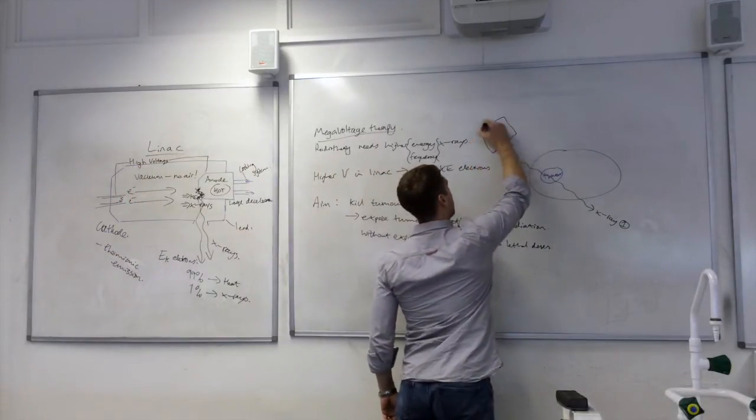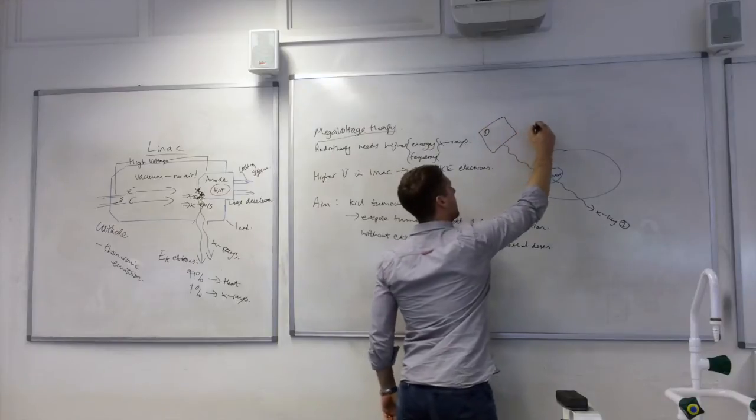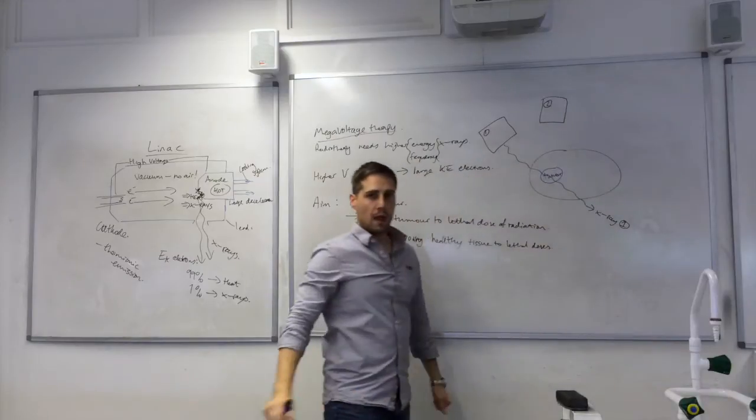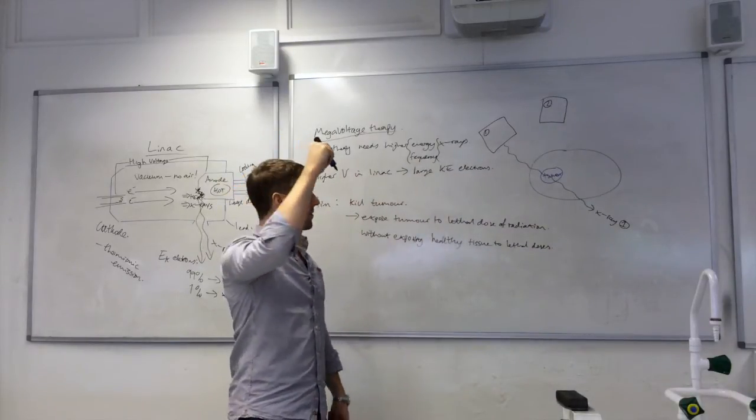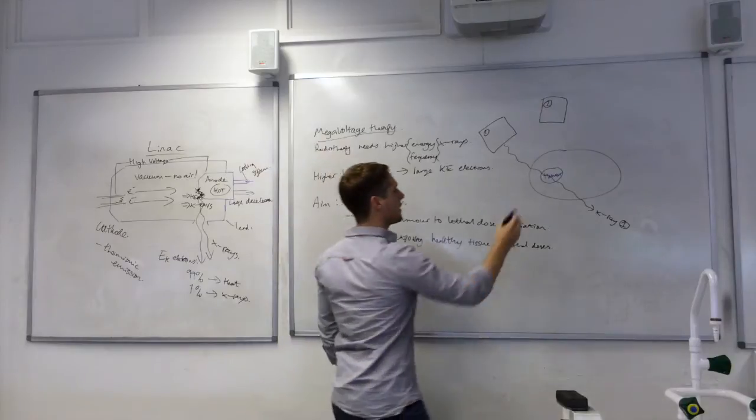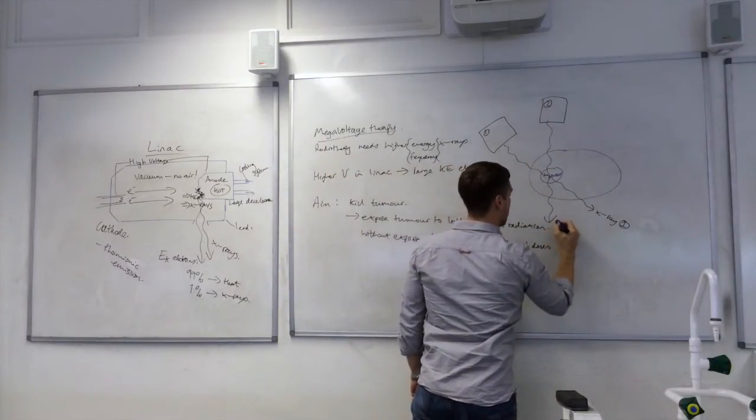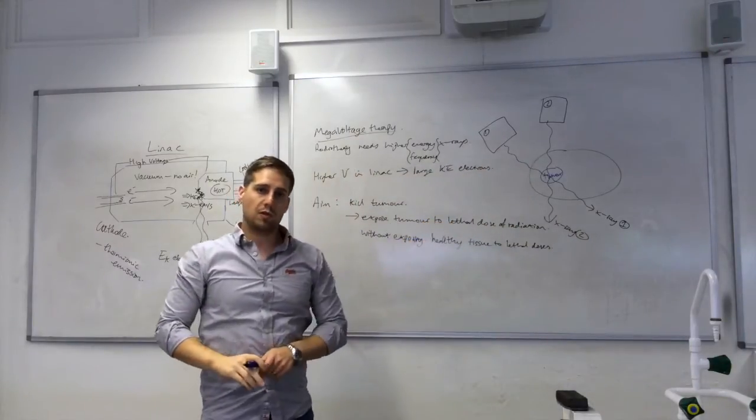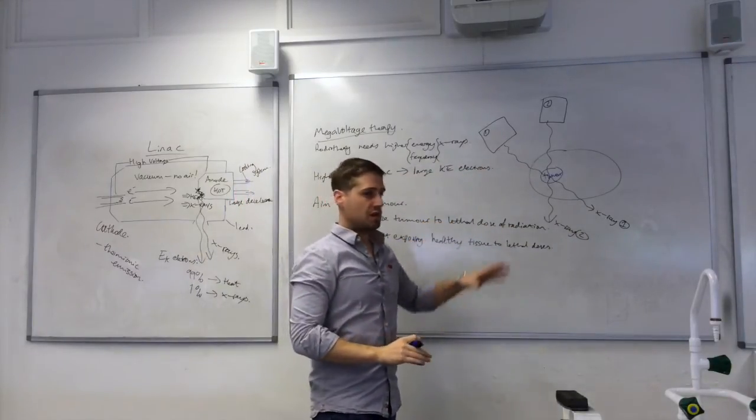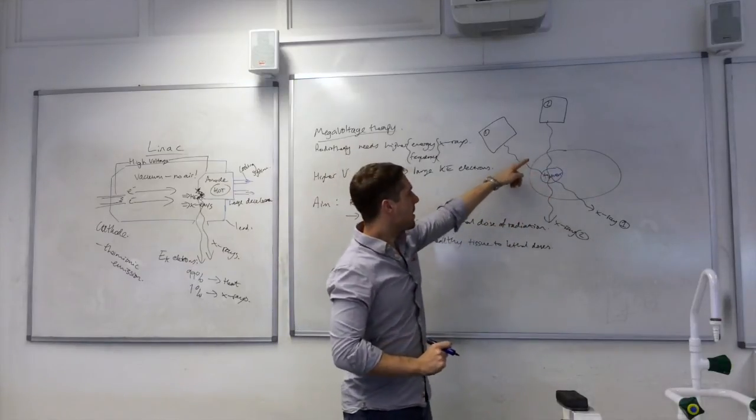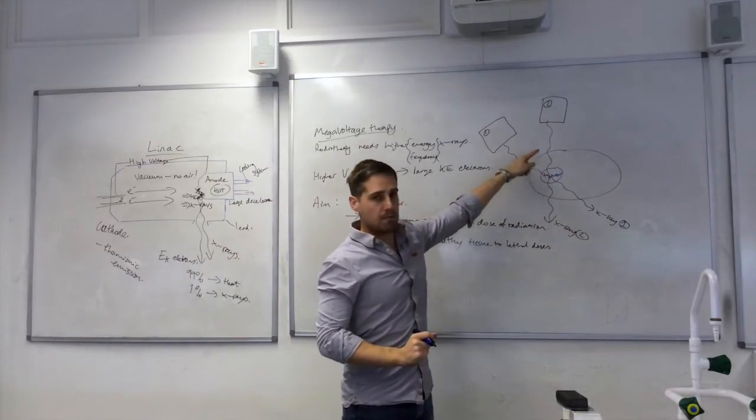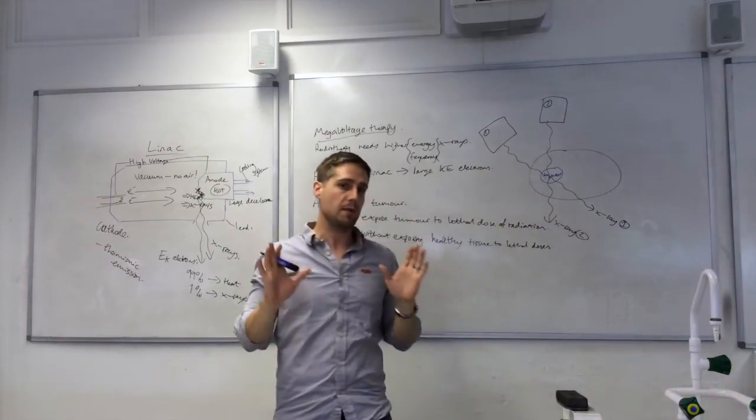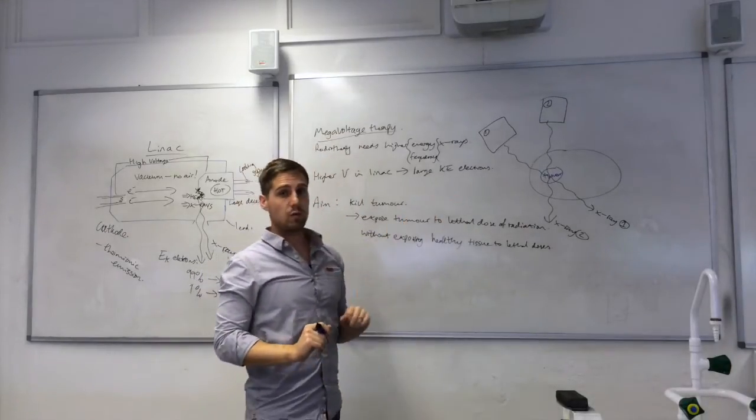Now, we're going to rotate it so that it's in a new position. And we'll fire the X-ray beam again through the tumour so that it targets the tumour. You can see that it's passed through the tumour. So, the tumour has received two lots of radiation exposure there. But the rest of the beam goes through different healthy tissue this time. So, all of the healthy tissue so far has only been exposed once. But the tumour has been exposed twice.